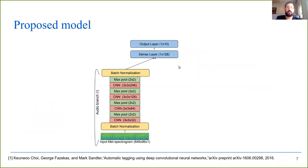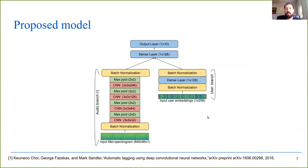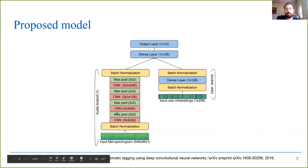Our proposed model is based on an existing audio-based model: a convolutional neural network applied to the mel-spectrogram — a well-performing model for the auto-tagging task by Choi. Our proposal is to add another branch that takes the user as input, in the form of user embeddings. These user embeddings are computed through matrix factorization of the user-track listening history. This gives us two models: an audio-only branch, and an audio plus user branch.